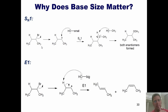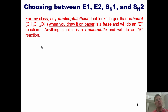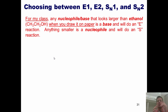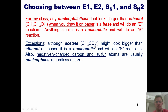You might ask: where do I draw the line regarding size? For my class, any nucleophile/base that looks larger than ethanol — whose structure is shown here — when drawn on paper, is a base and will do an E reaction. Anything equal to or smaller than ethanol on paper is a nucleophile and will do a substitution reaction. That is where I draw the line. There are exceptions: although acetate looks larger than ethanol on paper, it is a nucleophile and will do substitution reactions. Also, negatively charged carbon and sulfur atoms are almost always going to act as nucleophiles, regardless of size.